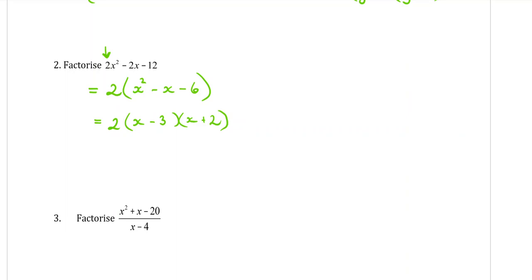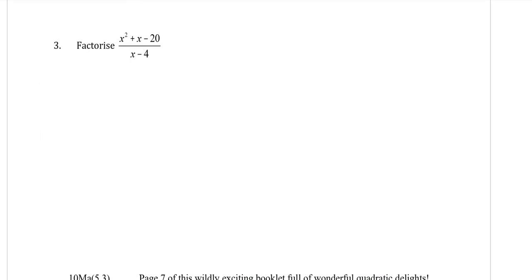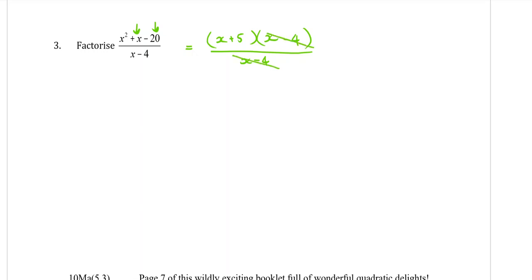Once we're comfortable with factorising, we start heading into factorising that involves fractions. Any time you're asked to factorise or simplify, you should always factorise anything you possibly can first, and then hopefully there'll be some things you may be able to cancel off. So for this question, the top of the fraction is a monic trinomial, so it factorises into two brackets with x at the start of each. We're looking for two numbers that times to give negative 20 and add to give positive 1, which would be positive 5 and negative 4. The x minus 4 on the bottom cancels the x minus 4 from the factorised numerator, and all that is left is x plus 5.